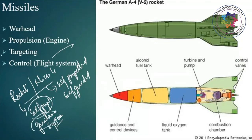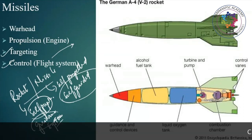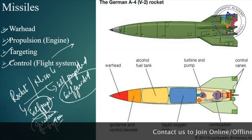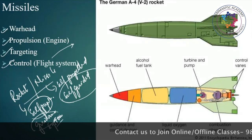This missile has a targeting and a control system which helps in guidance to hit the target accurately. Whereas the rocket will only have the first two things — warhead as well as propulsion. That is the basic difference between a rocket and a missile. The warhead is the destructive part of the missile.